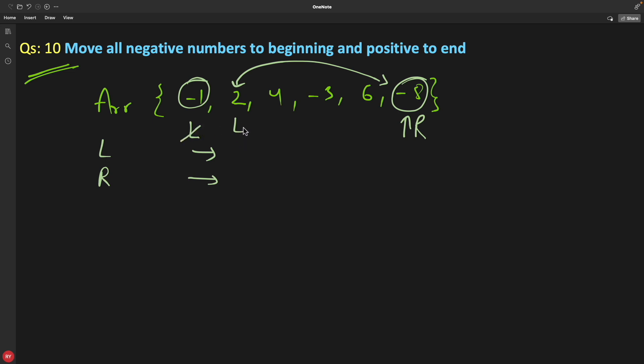So let's increment this L. We'll just keep this minus 1 here. We'll increment L, so L will come here now. And now you will again check this with minus 8. Is this positive and is this negative? Yes, this is the special condition, then only you will swap.